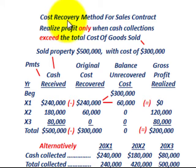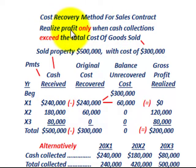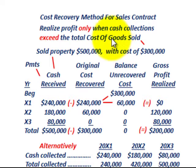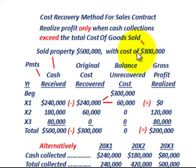What we're going to be going over here is the cost recovery method for a sales contract. This is where you realize profit only when the cash collections exceed the total cost of goods sold — or the cost of the property you sold. For example, we're going to have sold some property for $500,000 and it has a cost of $300,000.